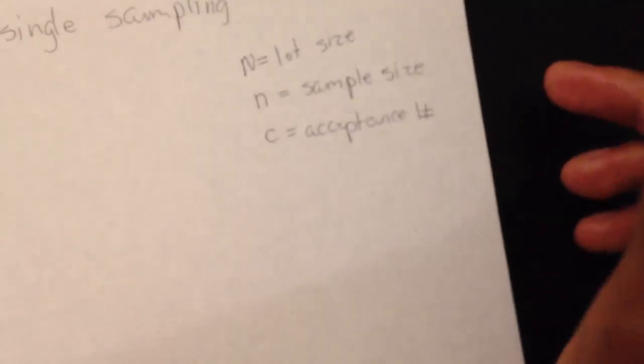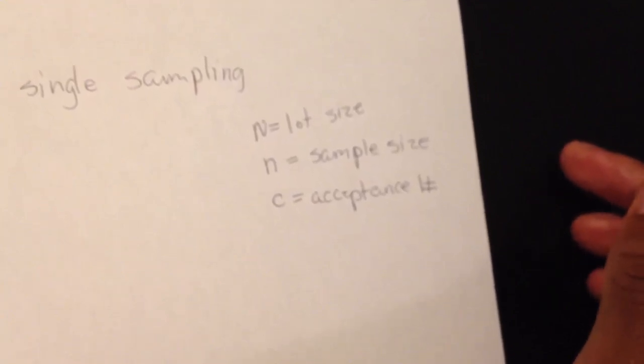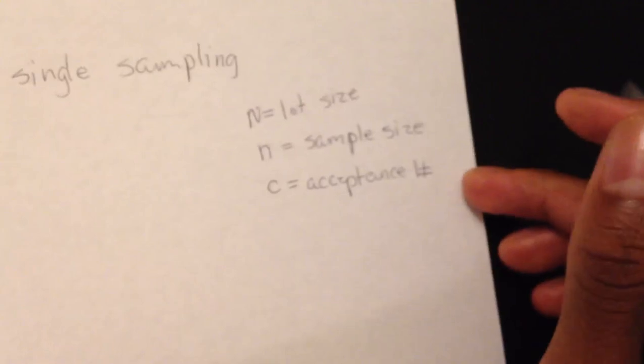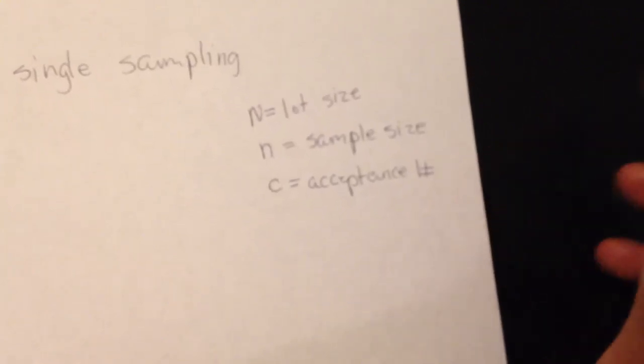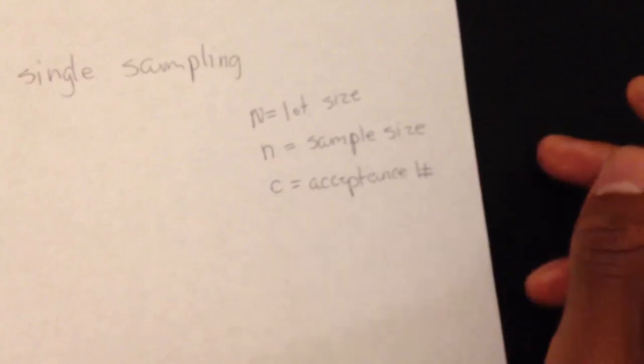Single sampling plan refers to that you only take one sample size. If that sample size is not accepted the whole lot is rejected. If it is accepted the whole lot is accepted and goes to production.